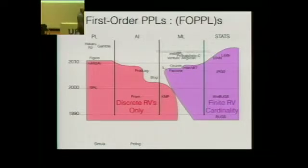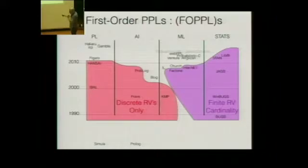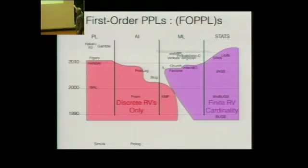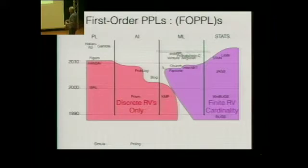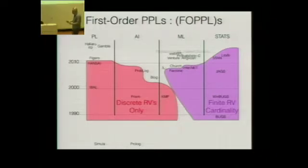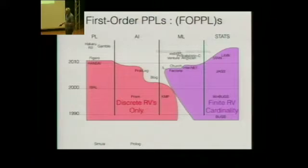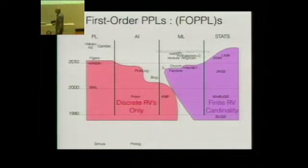There are a lot of probabilistic programming languages. There have been contributions from the programming languages community, the AI community, the machine learning community, and the statistics community. There's a principle distinction: some languages shade toward restricting the language to be compatible with some efficient inference scheme — exact inference and counting on one side, Gibbs sampling or HMC on the other — where expressivity is explicitly restricted.